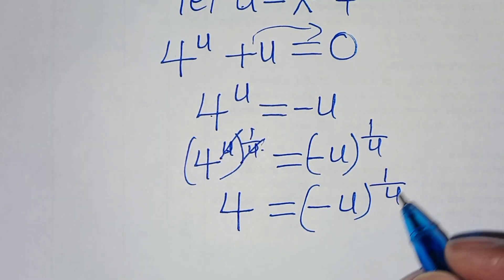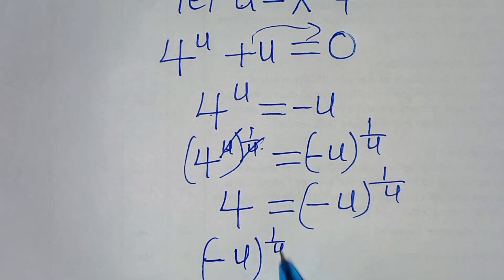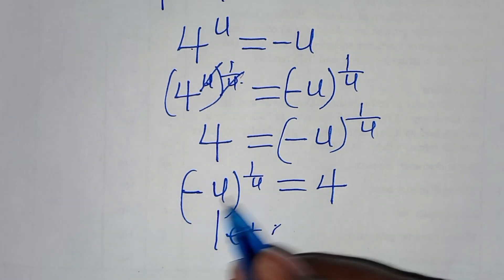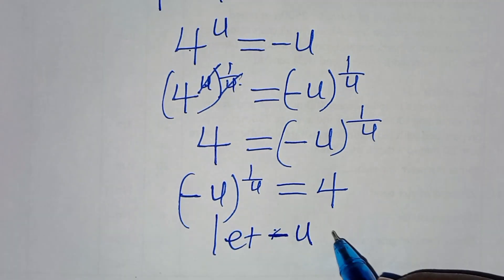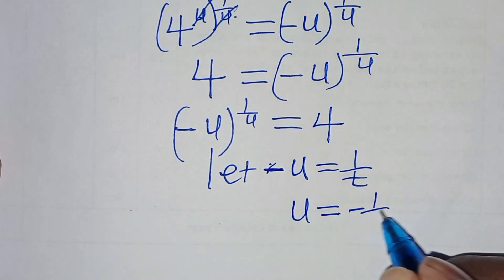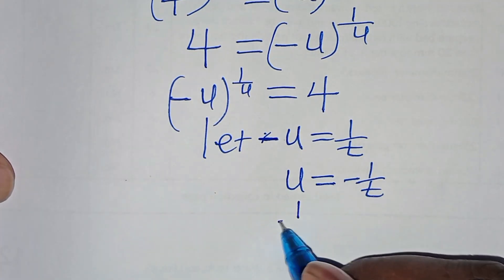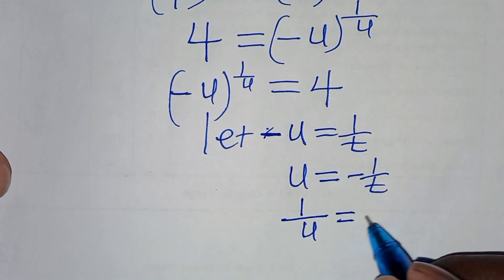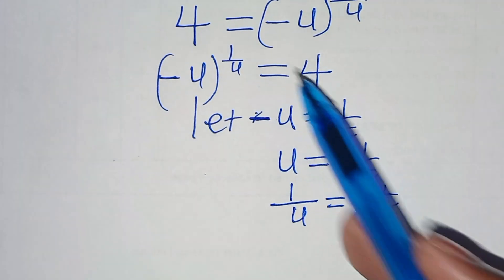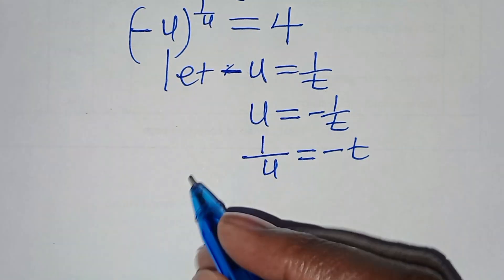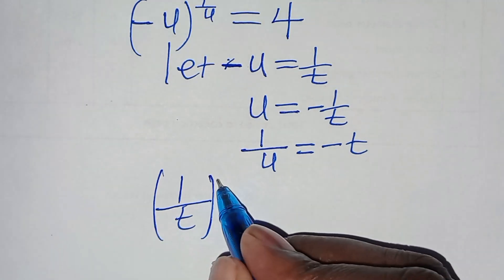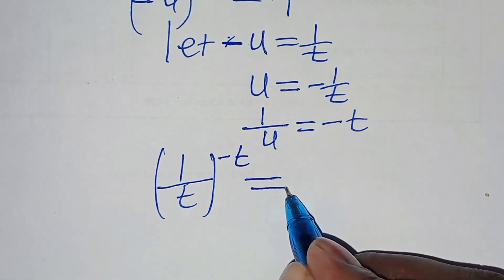The next step: we can let minus u be equal to 1 over t, so that u will be equal to minus 1 over t, and this implies that 1 over u is equal to minus t. Let's substitute in terms of t, so that now we have 1 over t, raised to the power of minus t, this is equal to 4.